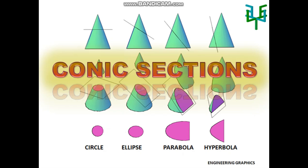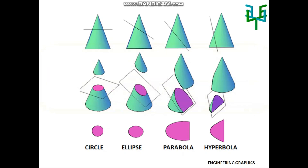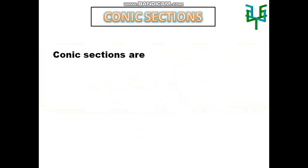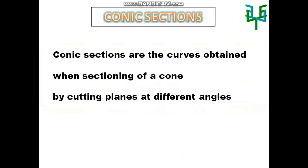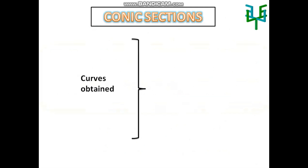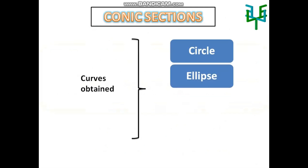This video explains the basics of conic sections. Conic sections are defined as the curve obtained when sectioning a cone by cutting planes at different angles. The different curves obtained are circle, ellipse, parabola, and hyperbola.